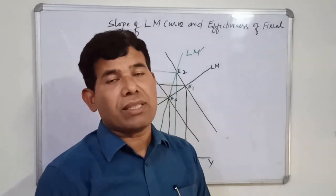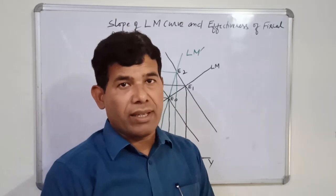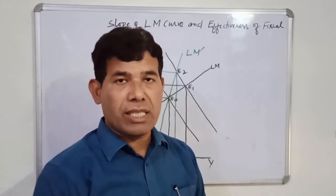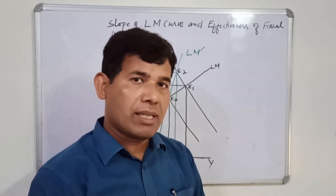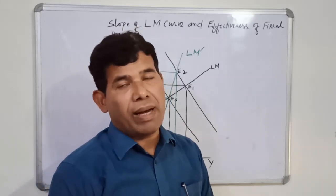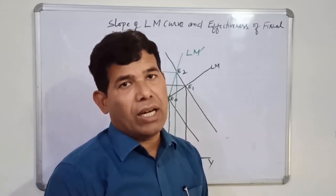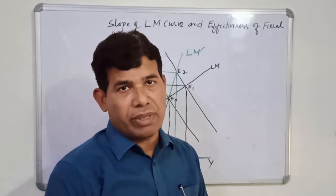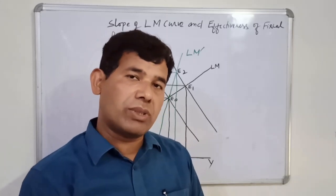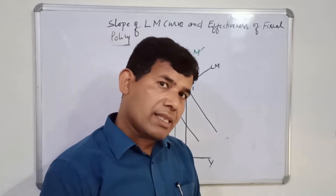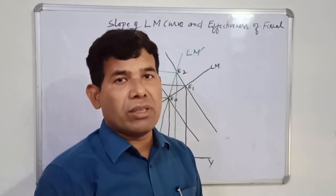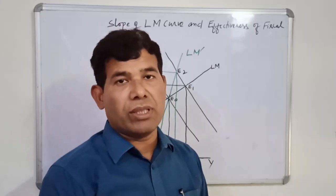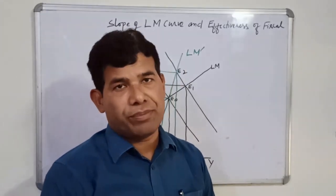If K rises, the LM curve becomes steeper; if K falls, the LM curve becomes flatter. Similarly, if H rises — that is, the sensitivity or responsiveness of money demand to change in interest rate rises — the LM curve becomes flatter. And if H falls, the LM curve becomes steeper.